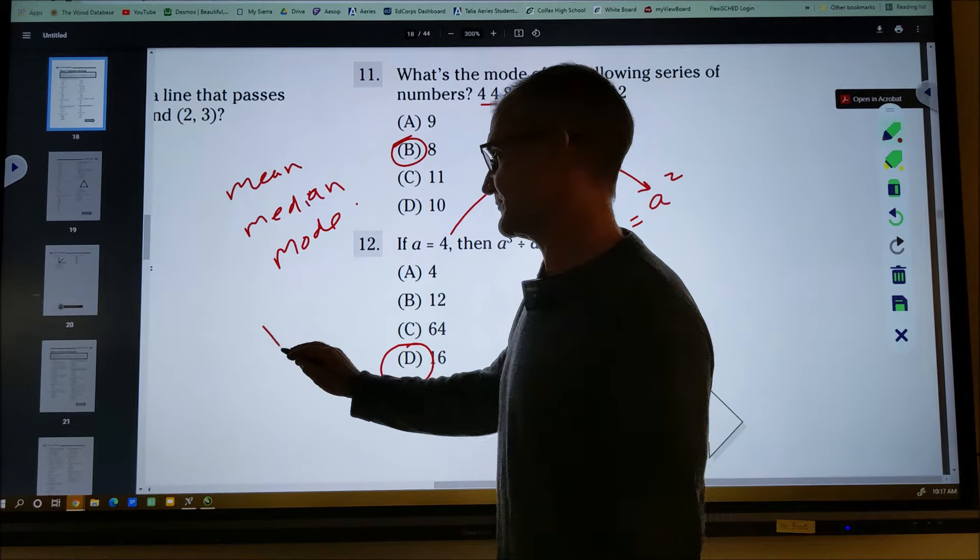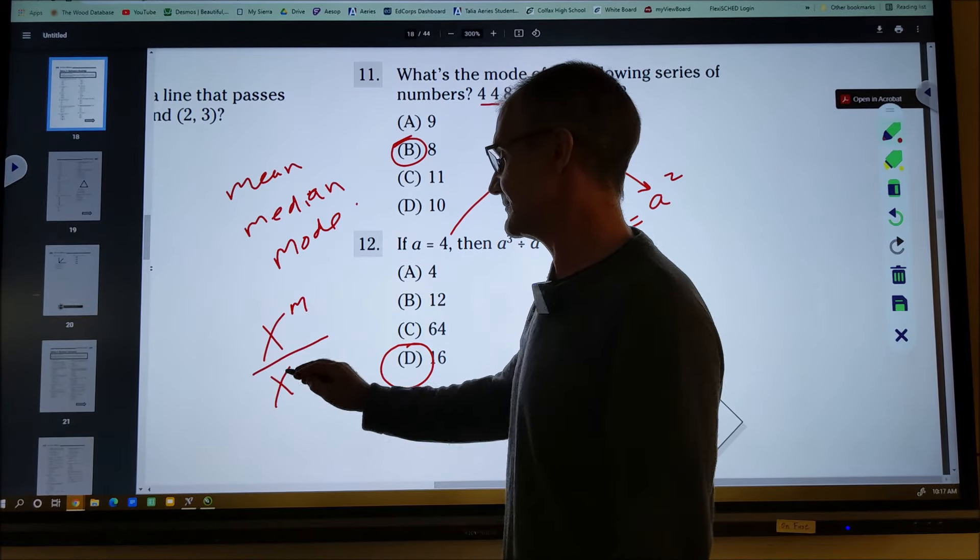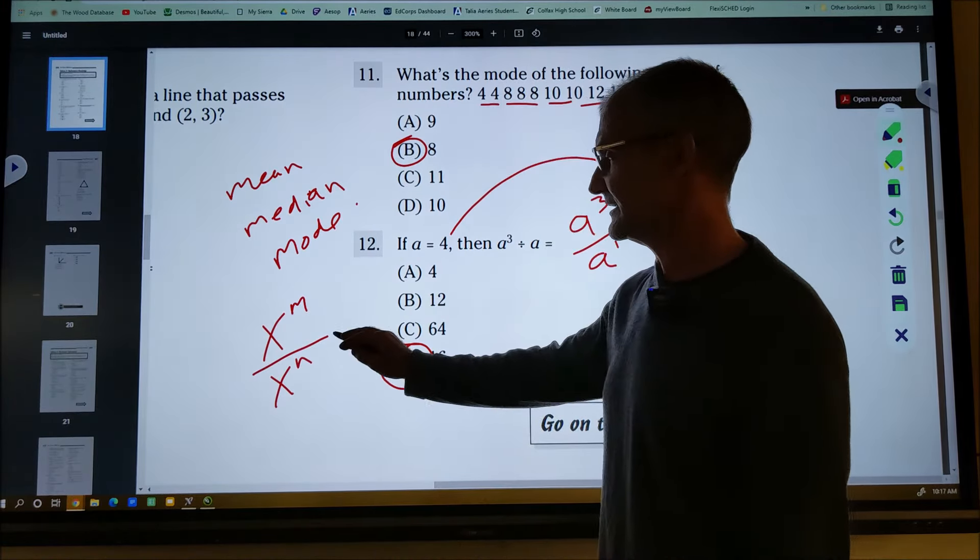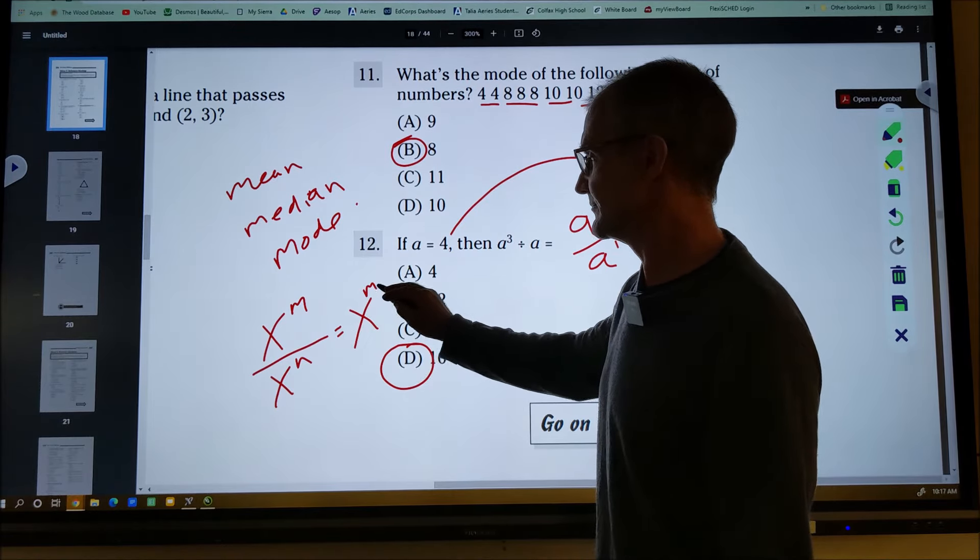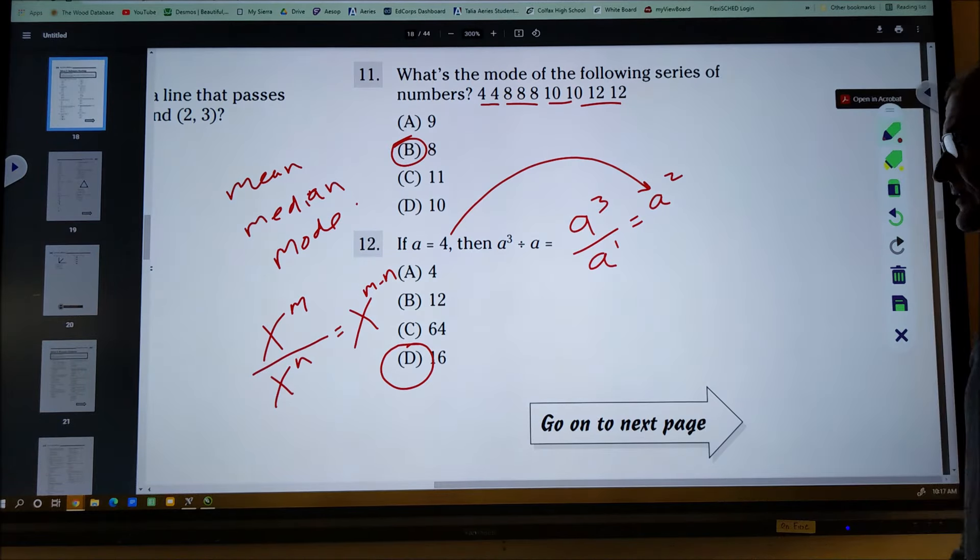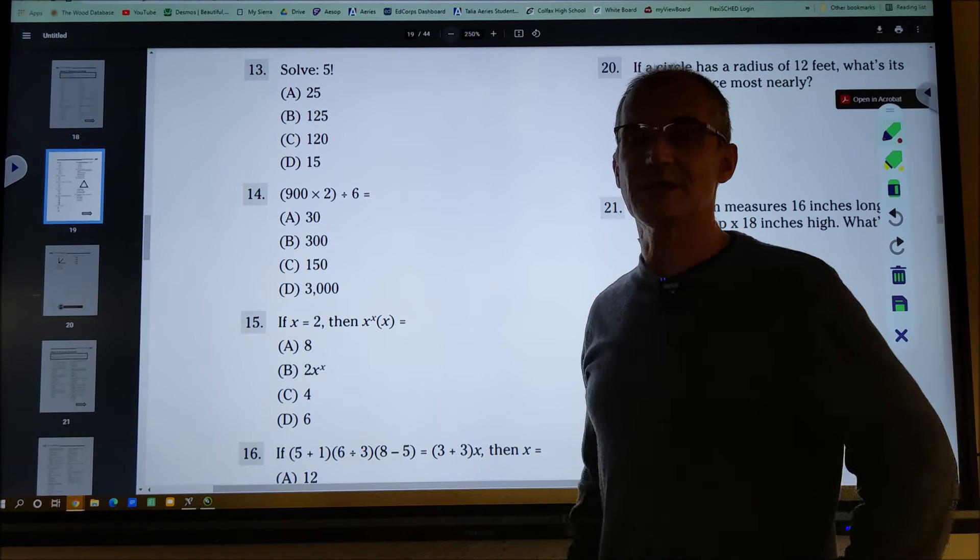So the rules of exponents with division is x to the m divided by x to the n. I keep that base number of x. And then m minus n. So that's where I got the three minus one from.